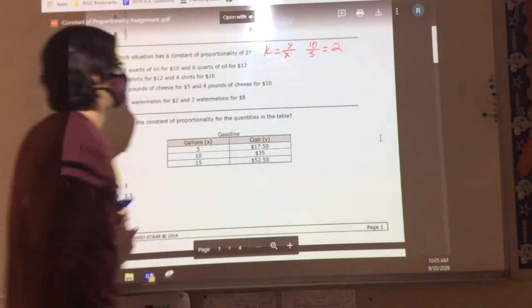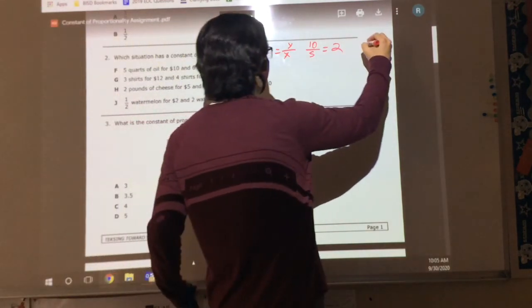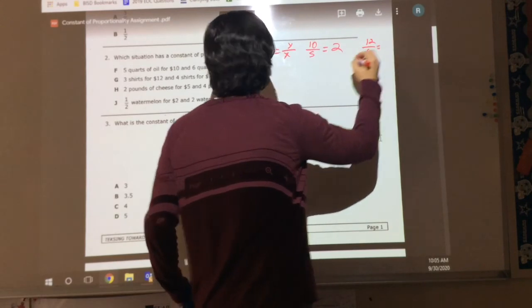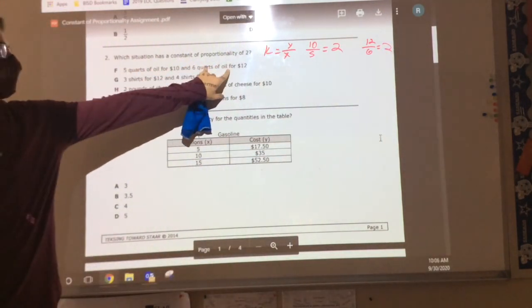2? And what does 12 over 6 equal? Over 2. Do you see where I'm getting the 10 and the 5 from? Yes. Okay, so A works out.